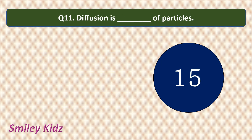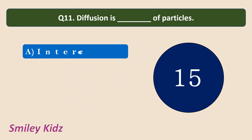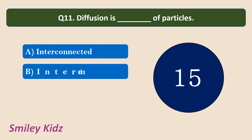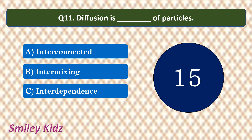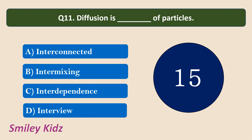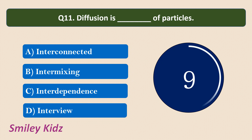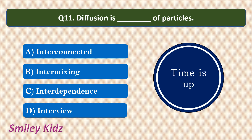Question number 11: Diffusion is the dash of particles. Options are: Interconnected, Intermixing, Interdependence, Interview. Your time starts now. Your time is up. The correct answer is Intermixing. Diffusion is the intermixing of particles.